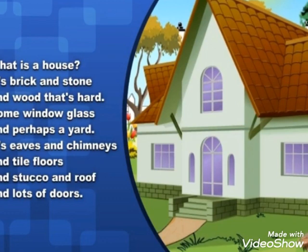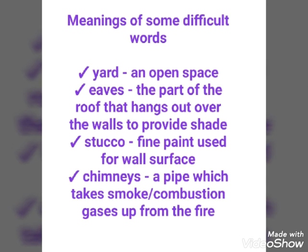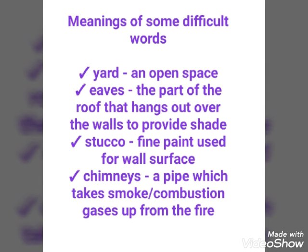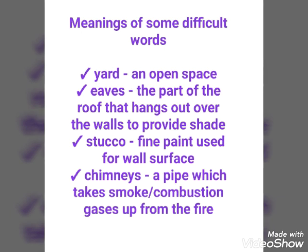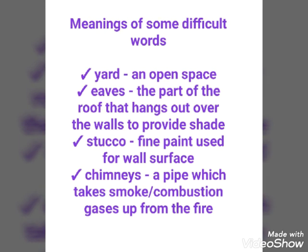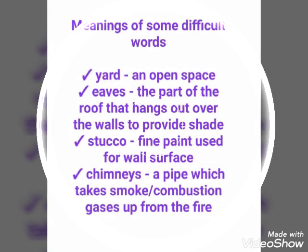So first I will explain the meaning of some difficult words. The first word is yard — yard means an open space. It can be at the front or the back of the house, and can be used for gardening or any other purpose. Eaves means the part of the roof that hangs out over the walls to provide shade. Stucco means fine paint. Chimneys are a pipe which takes smoke or combustion gases up from the fire, and normally chimneys are found in the kitchen of any house.